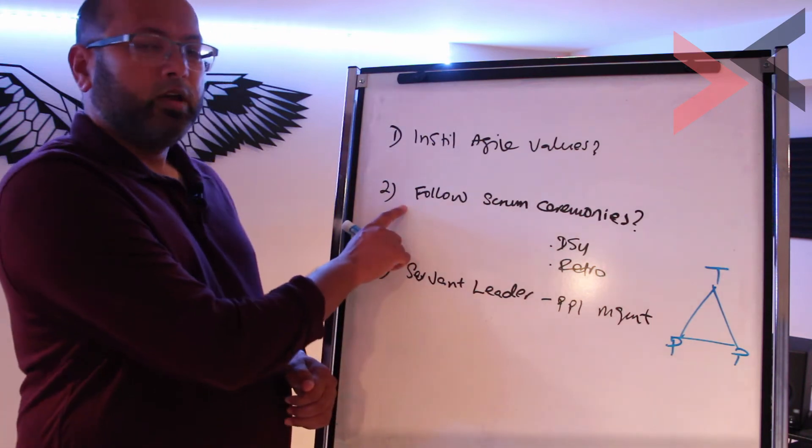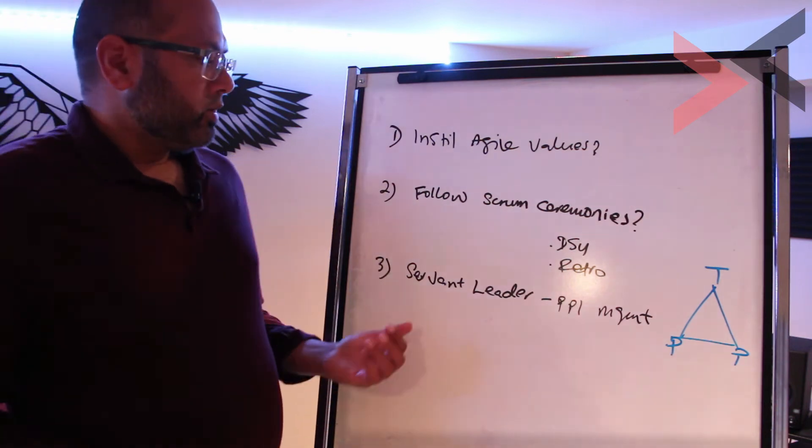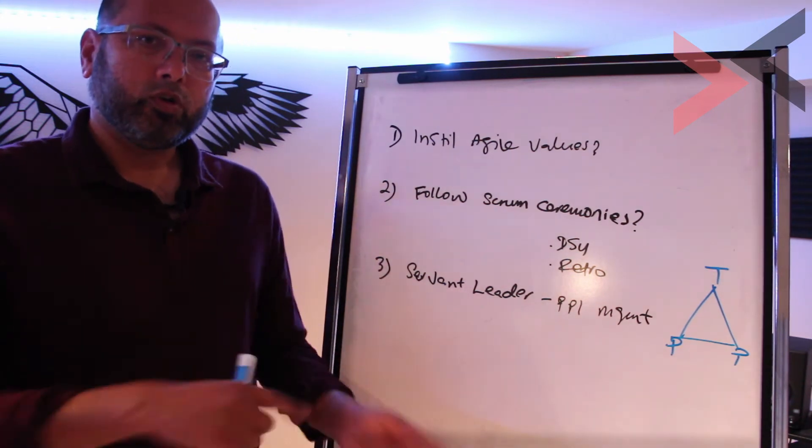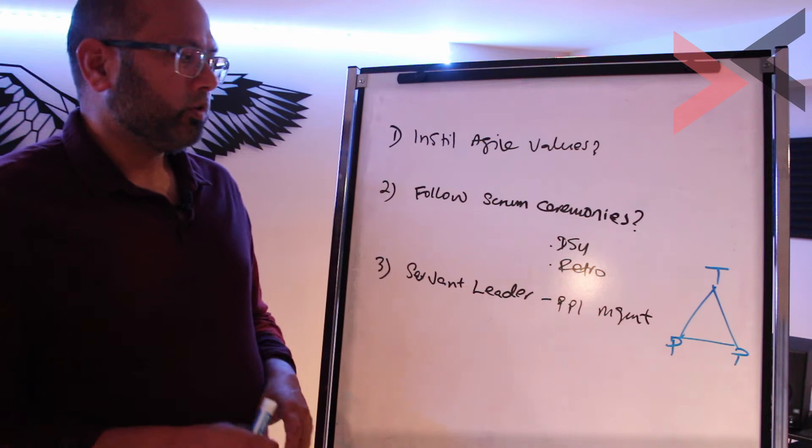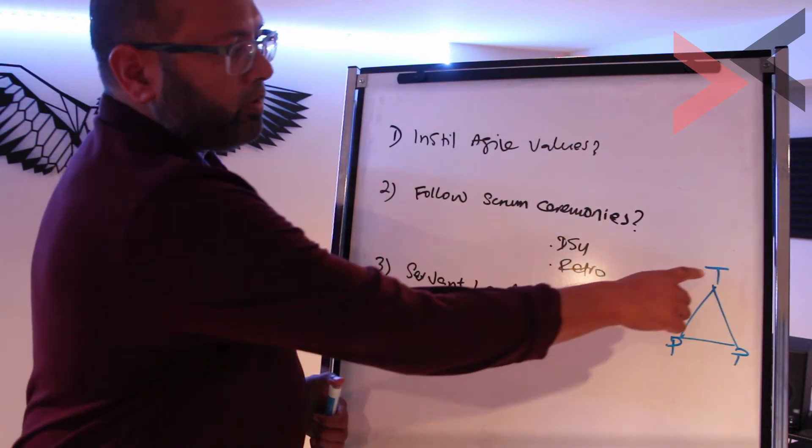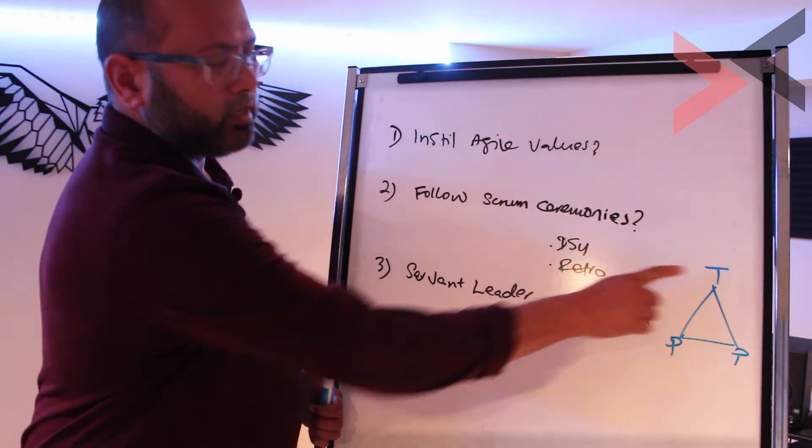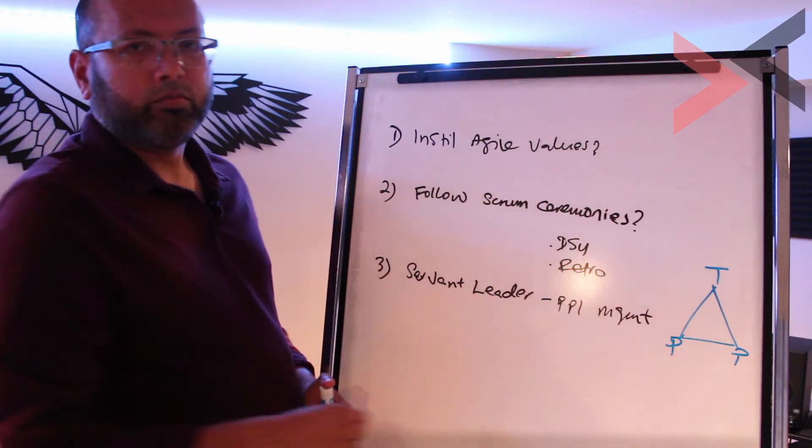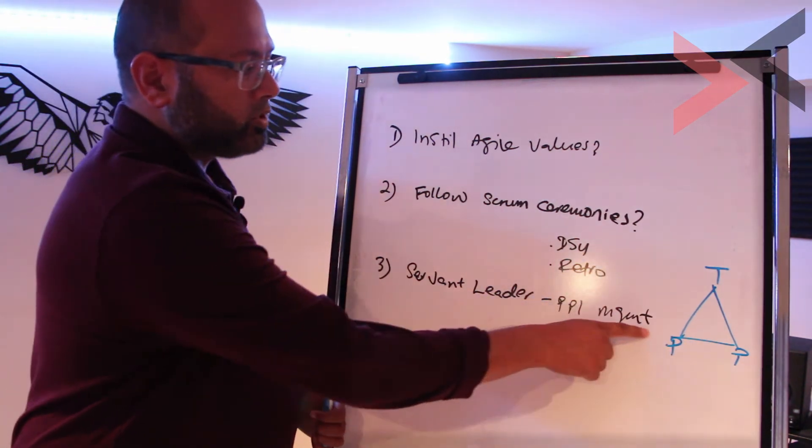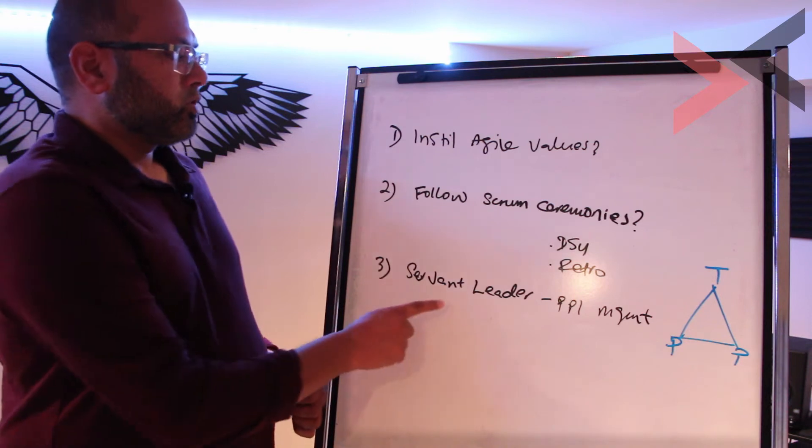Number three: You're a Scrum Master, you're a servant leader, you don't have any power. How do you make people do what you want them to do? How do you manage people? So that's a very good question. So you can say, 'Well I am a servant leader, but if you remember: technology, process, people - you can always understand technology, you can always understand process, but you can never understand people. People management is the most difficult, complex area to master.'